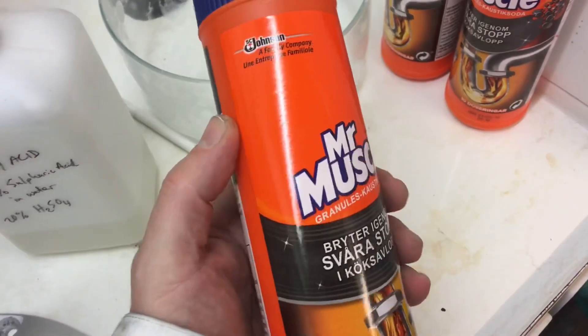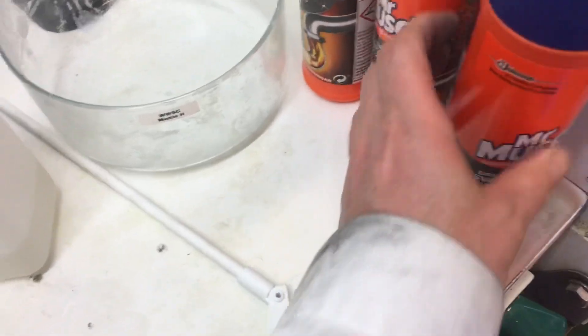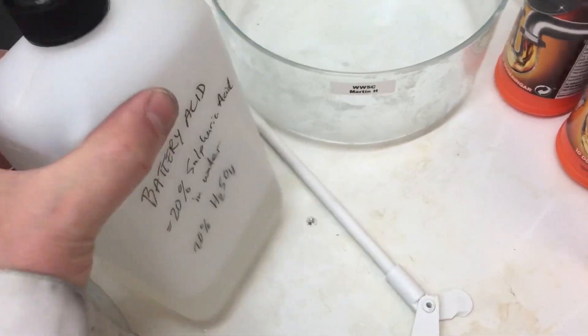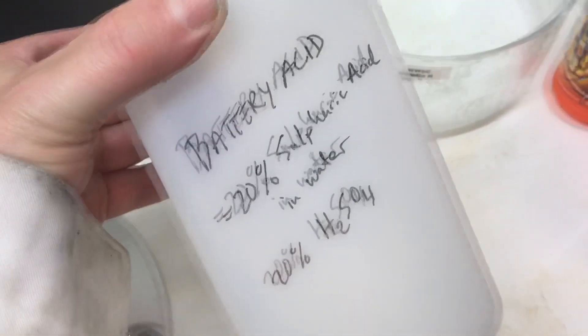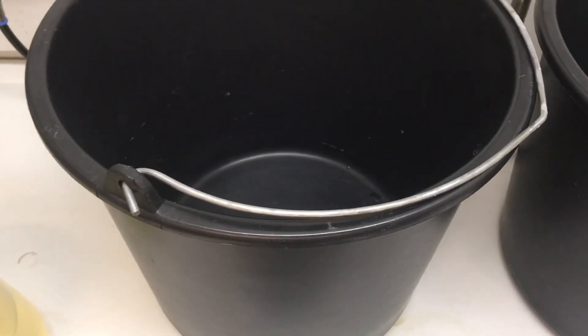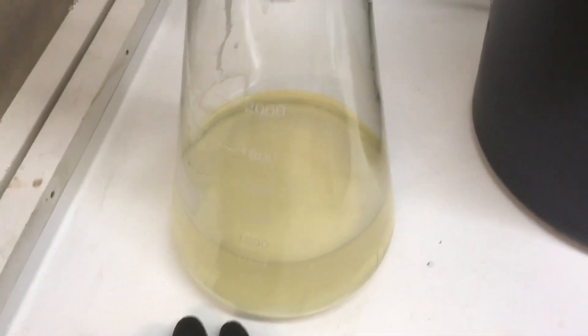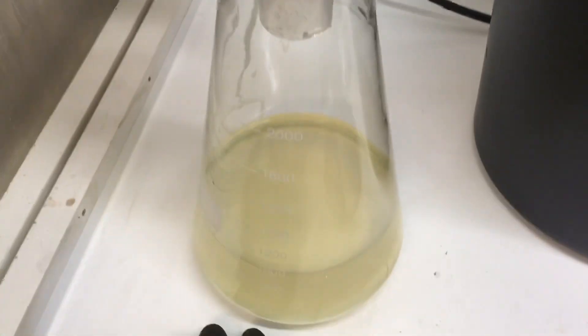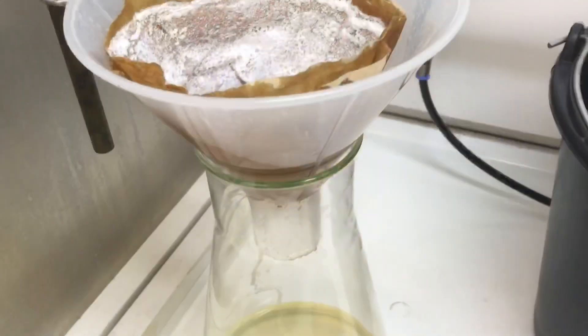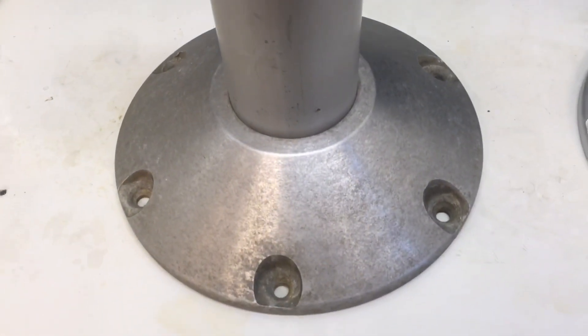Then we need some battery acid. This is battery acid from a normal petrol station, about 20% sulfuric acid in water. You need two buckets like this and some kind of setup to be able to filter. This is your caustic soda. I will show you why we need this.